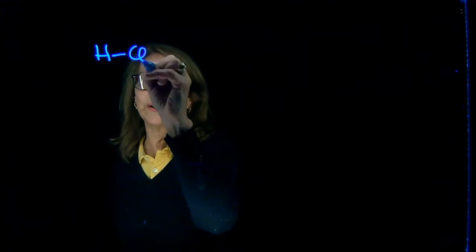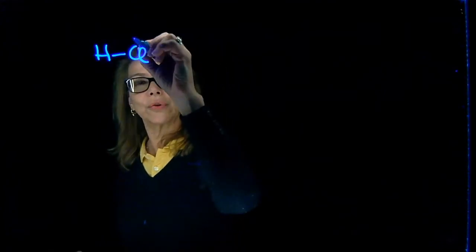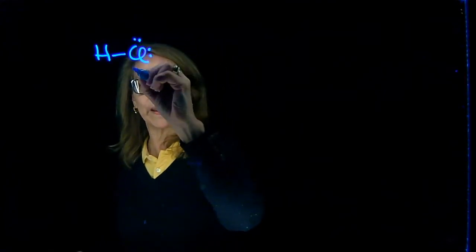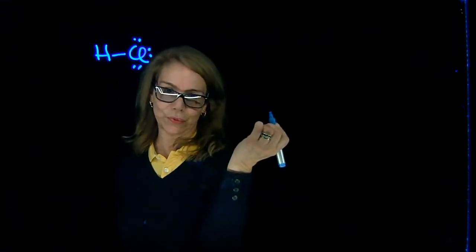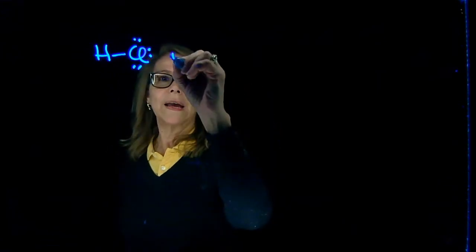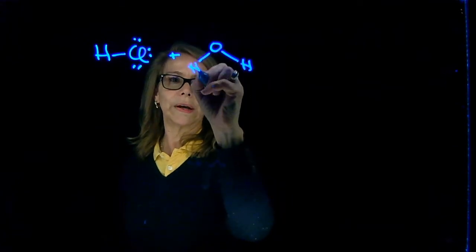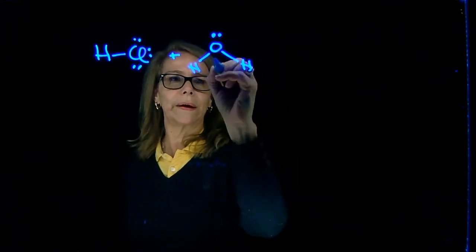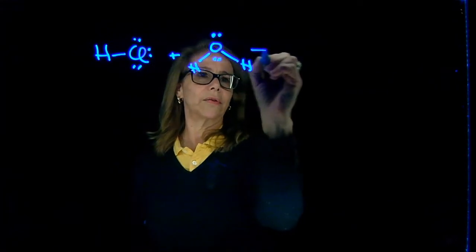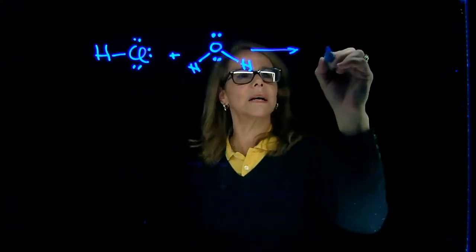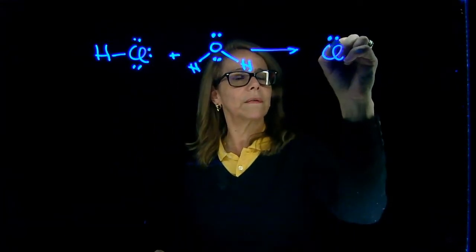We're going to continue talking about Bronsted-Lowry acid and bases, and I'm going to give you a couple of reactions on that. Say that we have hydrochloric acid, and here I'm going to draw bonds and lone pairs explicitly as you would do in your Lewis structure. I'm going to make the reaction of that in water, and again I'm keeping my lone pairs and here I'm going to draw the arrow of the reaction and we are forming these two species.